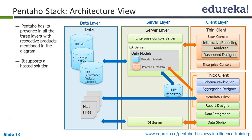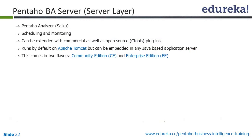Here we'll see the detailed architecture view. Overall it has three layers: first is the data layer, then the server layer, and then the client layer, with both thin and thick clients. Pentaho has its presence in all three layers with respective products mentioned in the diagram, and it supports a hosted solution. We'll understand the various offerings in Pentaho in both areas and look at individual Pentaho products in the next slide.